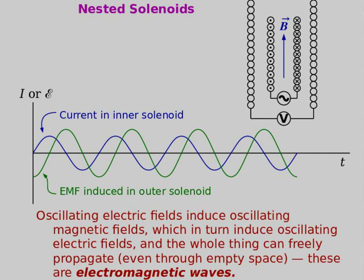So an oscillating current in the inner solenoid induces an oscillating EMF in the outer solenoid. You might wonder: doesn't the current in the outer solenoid then induce something back? Yes — and it gets complicated. This is the concept of inductance, which we haven't covered in this class but is important in advanced physics and electronics courses.